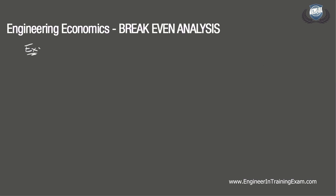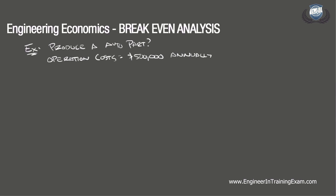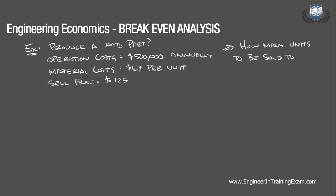A firm is deciding whether or not they should move forward with producing a proprietary automobile part. Through established research, they have determined that the operation costs for producing the part would run $500,000 annually. The material cost of producing each part would be $67 per unit. If the company sells the part at an average price of $125, how many units must be sold each year to break even?